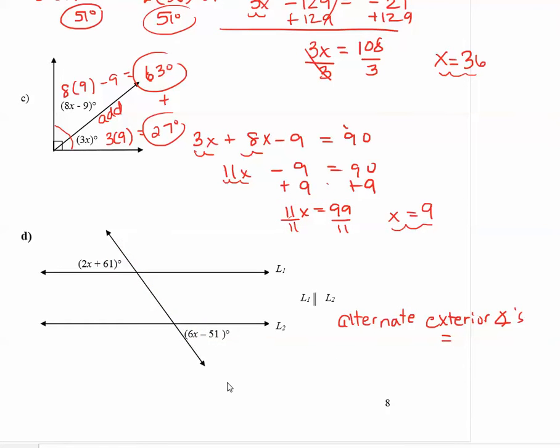So let's set these measures equal and solve for x. So I have 2x plus 61 is equal to 6x minus 51. So for this equation, let's get our letters on the left. So positive 6x becomes negative 6x. 2x minus 6x is negative 4x plus 61 equals negative 51.